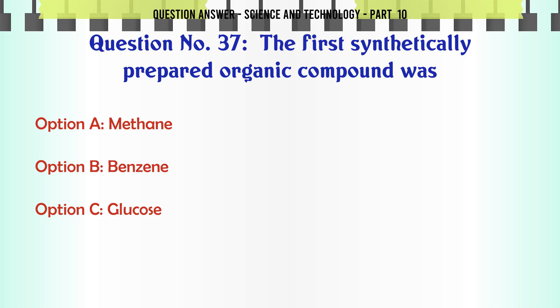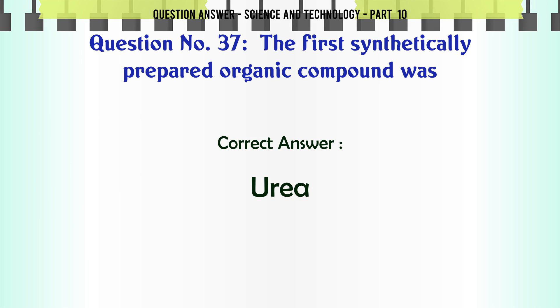The first synthetically prepared organic compound was. A. Methane. B. Benzene. C. Glucose. D. Urea. The correct answer is Urea.